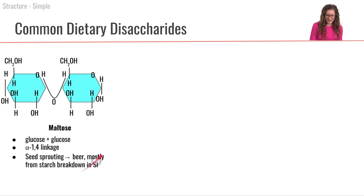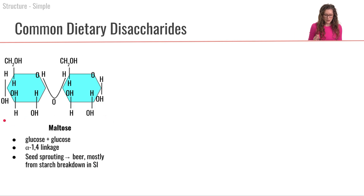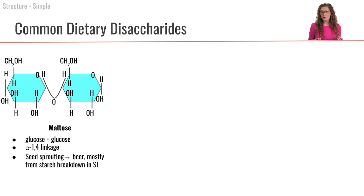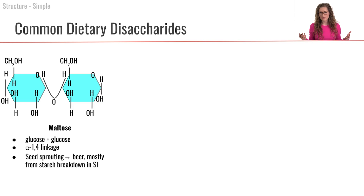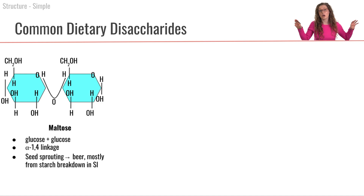The first one is maltose. Maltose is a disaccharide formed by two glucose molecules that are bound together by an alpha-1,4 linkage. Where do we get maltose? We get a lot of maltose from seed sprouting — for example, in beer, that is the malt in beer. We also will get maltose in the process of breaking down large polysaccharides in the small intestine. So as we take a long chain of glucose — starch — and break it down, it will generate some maltose in our small intestine as part of the digestion process.